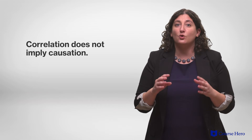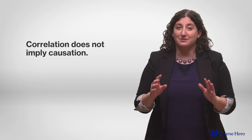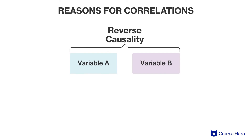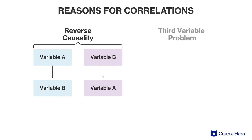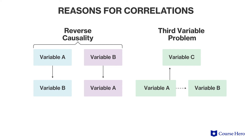Importantly, correlation doesn't tell us anything about what causes what — often summarized as 'correlation does not imply causation.' If smoking and lung cancer are positively correlated, there's only one plausible direction for that relationship. But what about a positive correlation between stress and depression? Does one cause the other, or is there a third factor that could be causing both?